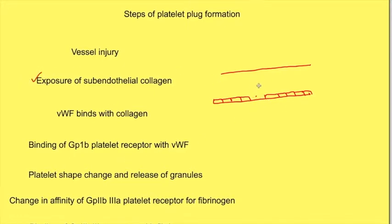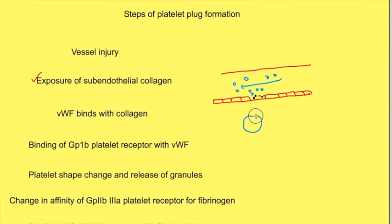At the site of vessel injury, endothelial cells are injured and there is exposure of subendothelial collagen. Circulation is ongoing and platelets are present. Because of this vessel injury, there is a change in shear force of flow, and platelets come and bind with von Willebrand factor. On the surface of platelets there is a protein known as GP1B which has affinity for this von Willebrand factor.